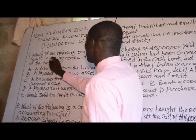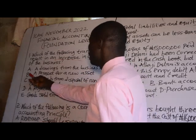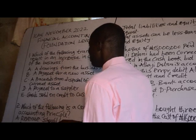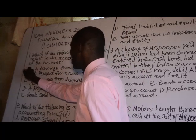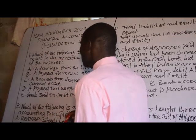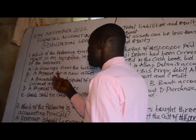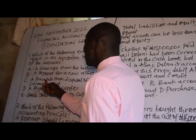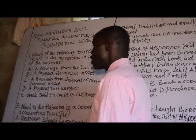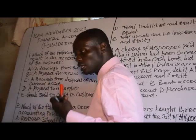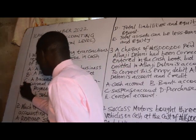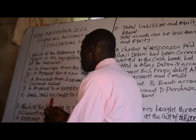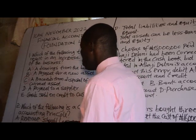Option A: drawings from the business. If the owner draws cash, the cash of the business will reduce, so drawings will lead to a reduction in cash — not A. Option B: payment for a new asset. If a new asset is acquired and payment is made, the cash of the entity will reduce — not B. Option C: proceeds from disposal of non-current assets. Where non-current assets are sold and the entity receives cash, the cash of the entity will increase — so C leads to an increase in cash. Option D: payment to a supplier. Where suppliers are paid for goods bought, the cash of the entity will reduce — not D.